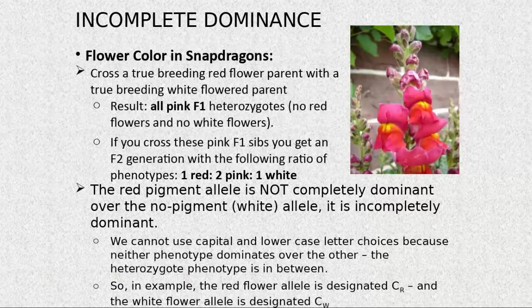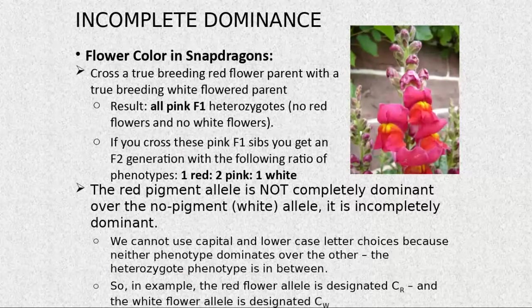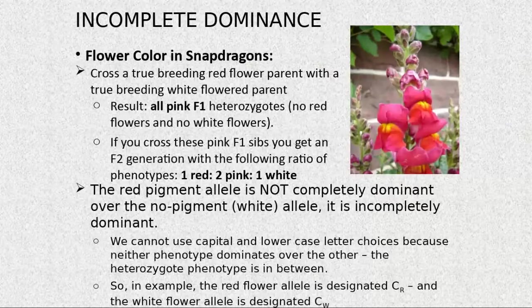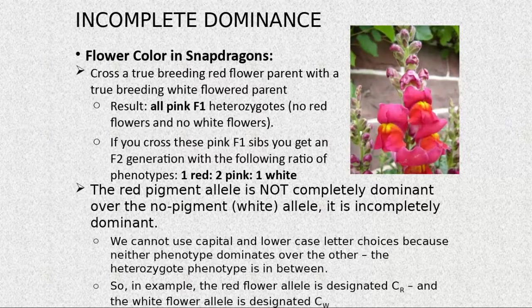When you self-cross this pink F1, you get the F2 generation with red, pink, and white appearing. The red pigment allele is not completely dominant over the non-pigment white allele, and therefore it's incomplete dominance. The red flower allele is designated CR and the white flower allele is designated CW.